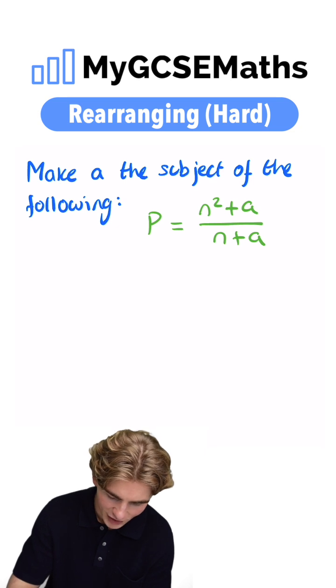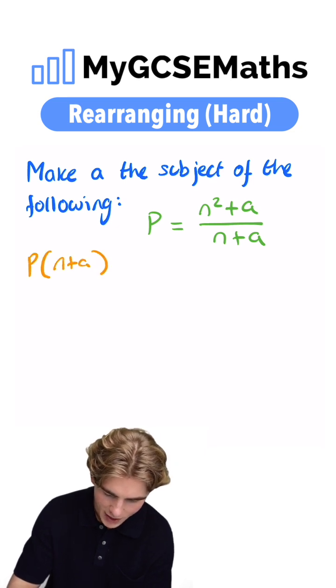When we do that, on the left-hand side, we're going to have P times by N plus A, and on the right-hand side, we're going to have N squared plus A.